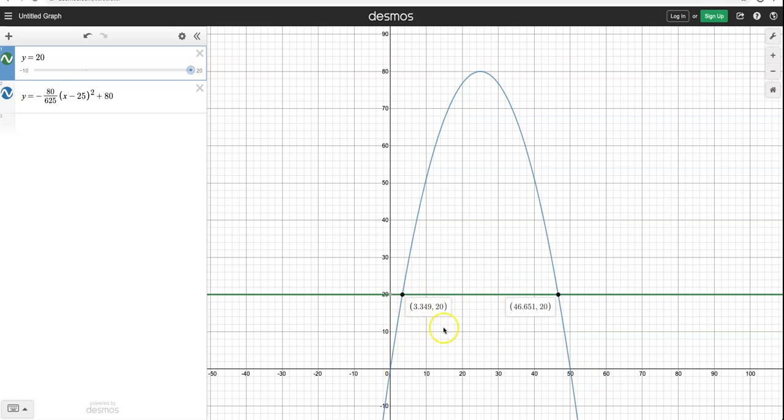But my goal here is to figure out how far away it is from Laura when it's 20 feet in the air. And we have the answers right here. Look. It says right here when it's 20 feet in the air, it's 3.349 feet away from Laura. That's on the way up. And then on the way down, when it's 20 feet high in the air, it is 46.651 feet away from Laura. So that's the answer for part B. It's just the x-coordinates of each one of these points. So there's two answers for part B. The first one would be 3.349 feet. And the second one would be 46.651 feet. You just need to read out those x-coordinates. That's pretty much all there is to it.